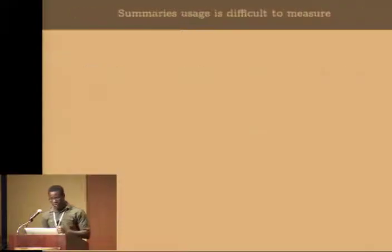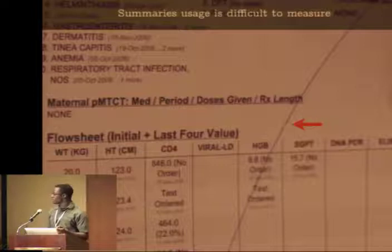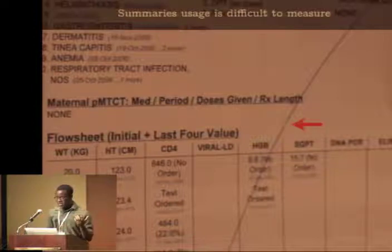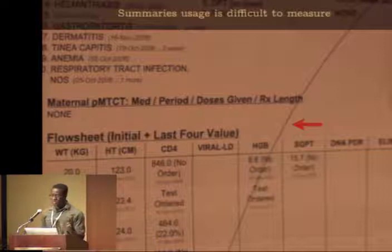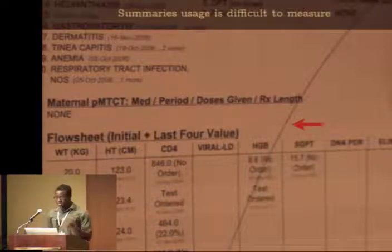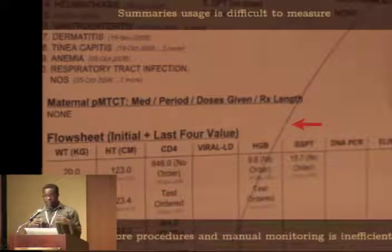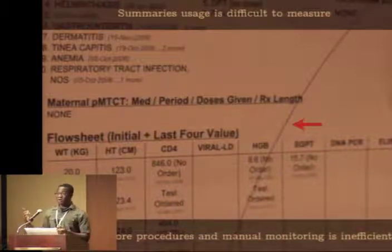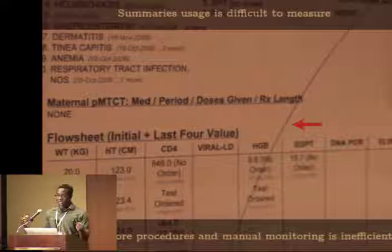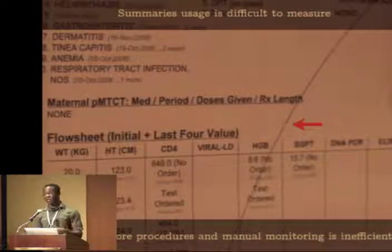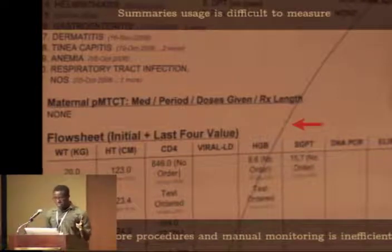The second issue is that summary usage is difficult to measure, and this is important because usage is a critical metric for supervisors who care about quality of care. Doctors are supposed to put a check mark on the summary, and then supervisors visit each site to count the marks on those summaries. Sometimes doctors forget or ignore the procedure, and the whole paper system doesn't make it easy to monitor usage — you literally have to go to all these sites across Kenya and count marks on sheets of paper.